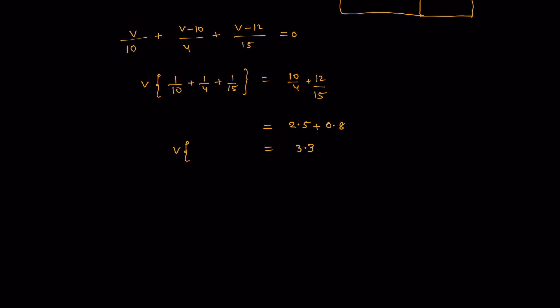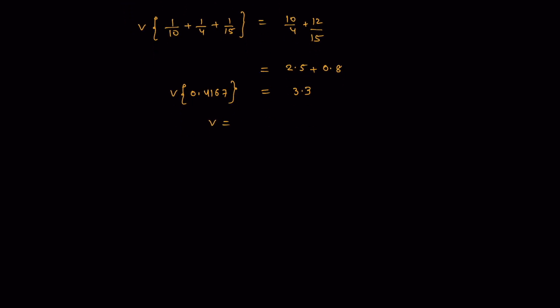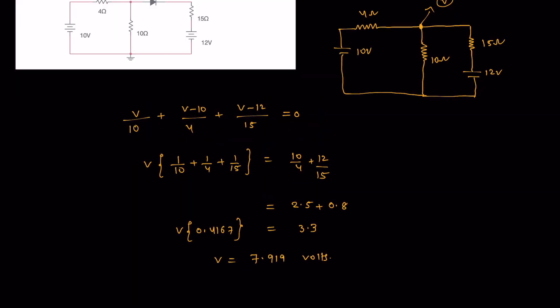On the left hand side, let's use a calculator. That equals 0.4167, which leads to the voltage V being 3.3/0.4167, which is roughly 7.919 volts. Now let's go back to our original circuit.